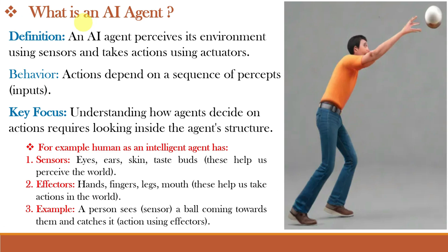First we should know what is an AI agent. We have studied what is agent and also agent and environment in our previous video classes. An AI agent is like a robot or software that senses its environment and makes decisions to act. It uses sensors like a camera or a microphone to get information and actuators to do something like move or speak. The agent's actions depend on what it has sensed so far.